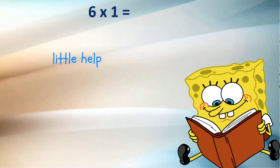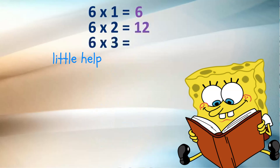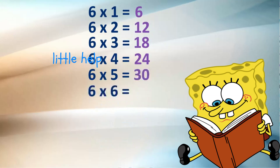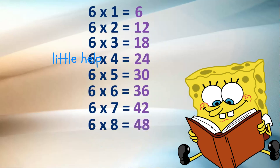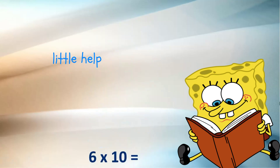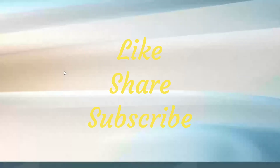6 twos are 12, 6 threes are 18, 6 fours are 24, 6 fives are 30, 6 sixes are 36, 6 sevens are 42, 6 eights are 48, 6 nines are 54, 6 tens are 60. Please like.